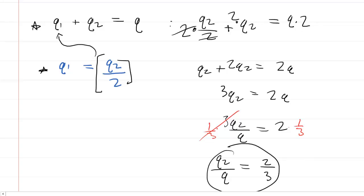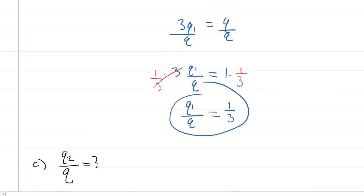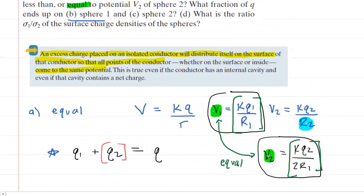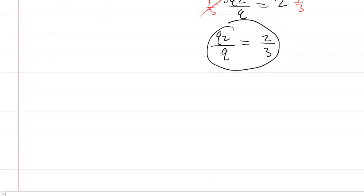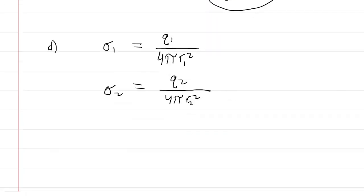We can finally move on to part D here, and in part D, we are asked for the ratio sigma one over sigma two of the surface charge densities. Now, the surface charge density of sphere one would be the amount of charge on sphere one divided by its surface area. The surface area of a sphere is four pi times the radius squared. And then similarly, sigma two would be the charge on sphere two divided by four pi times its radius squared. We want the ratio of these two, so we could actually divide the two equations.